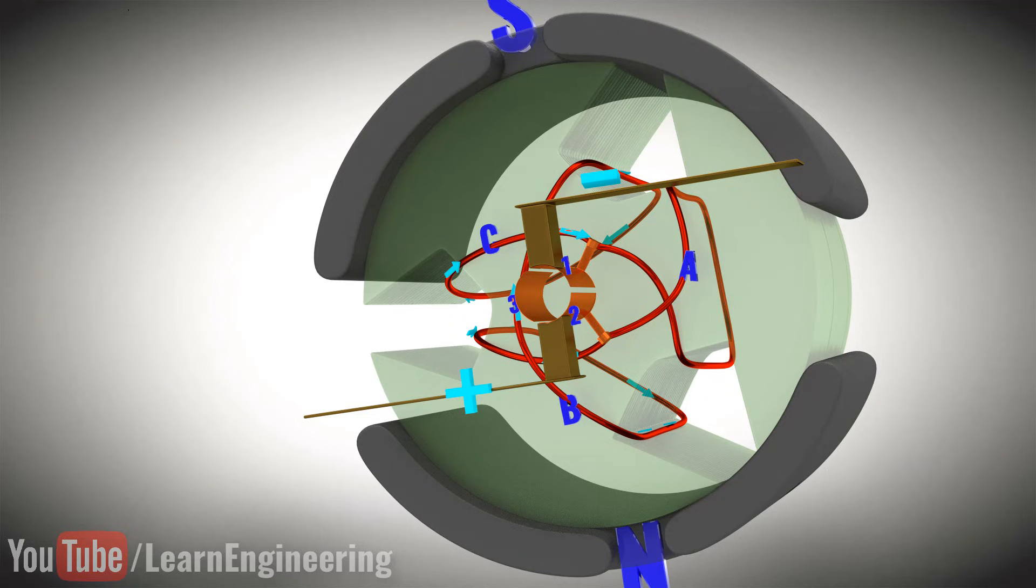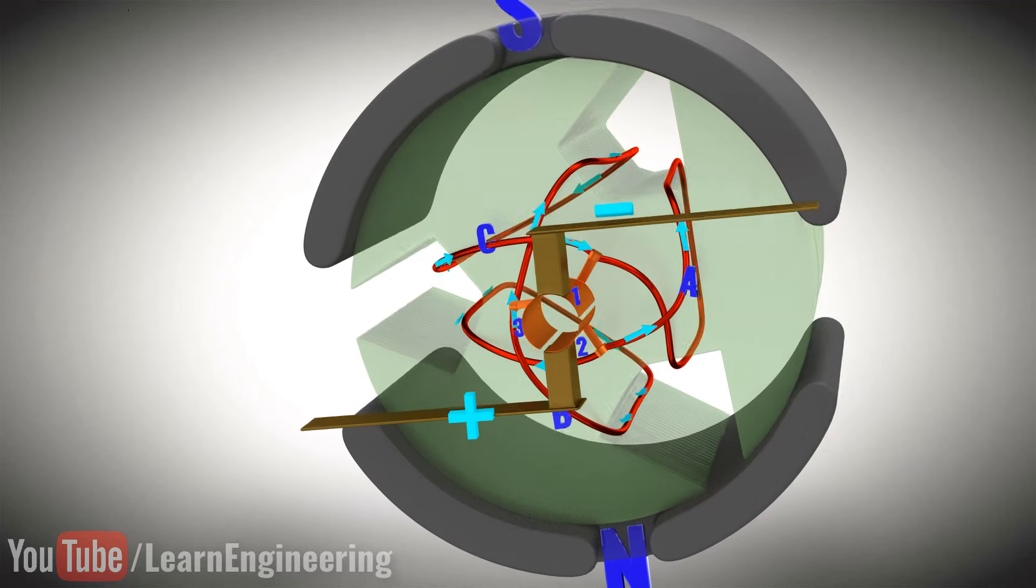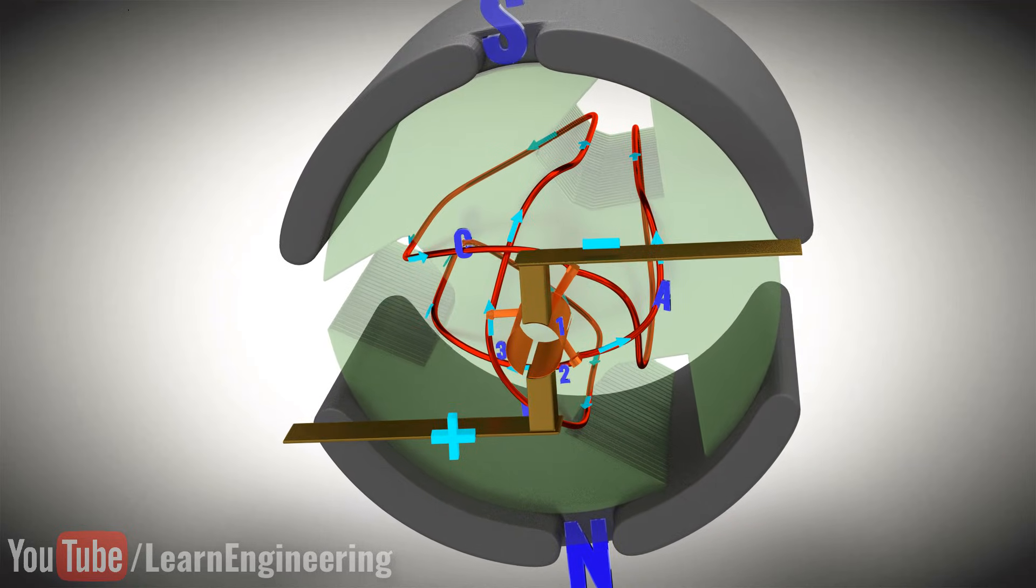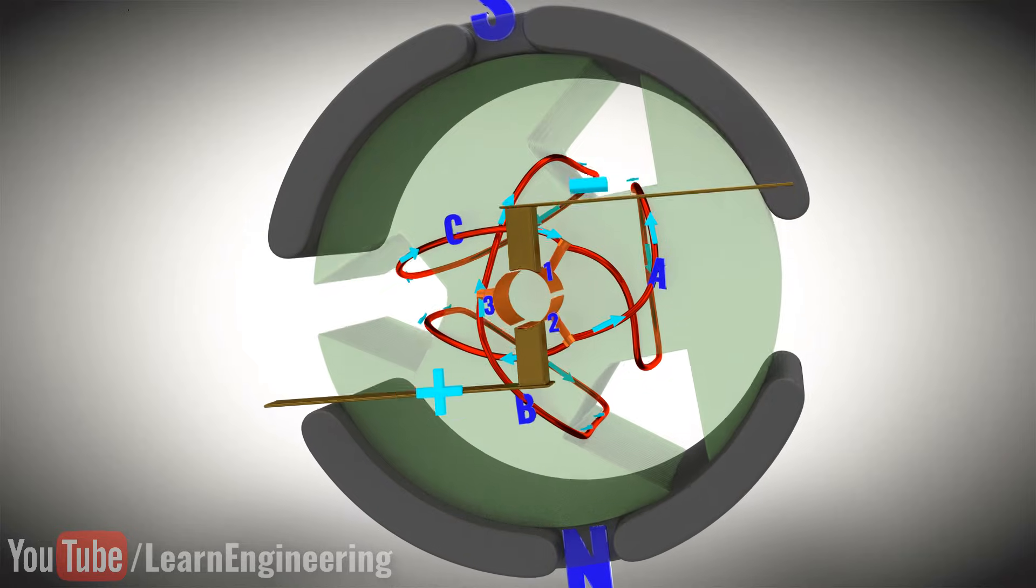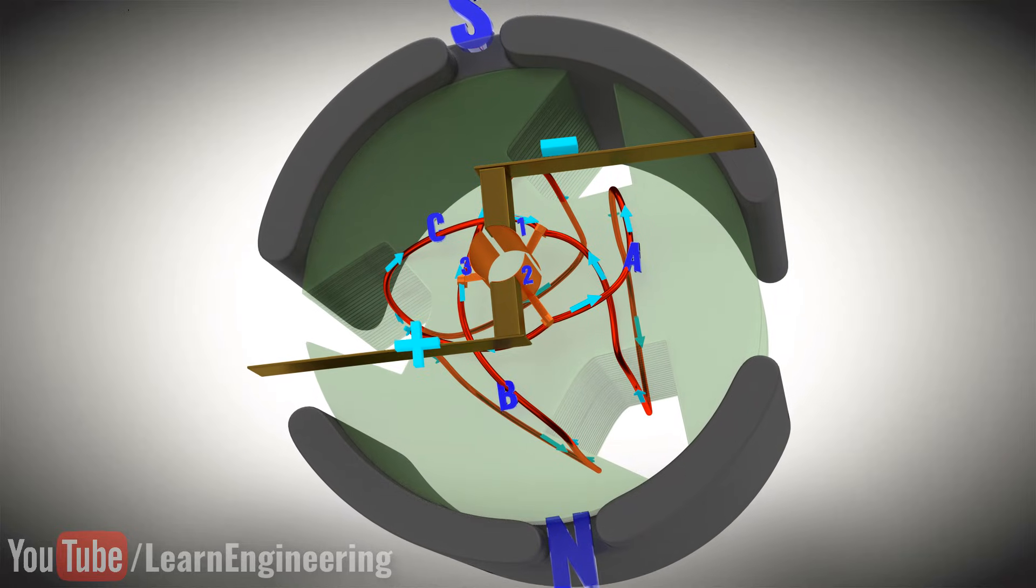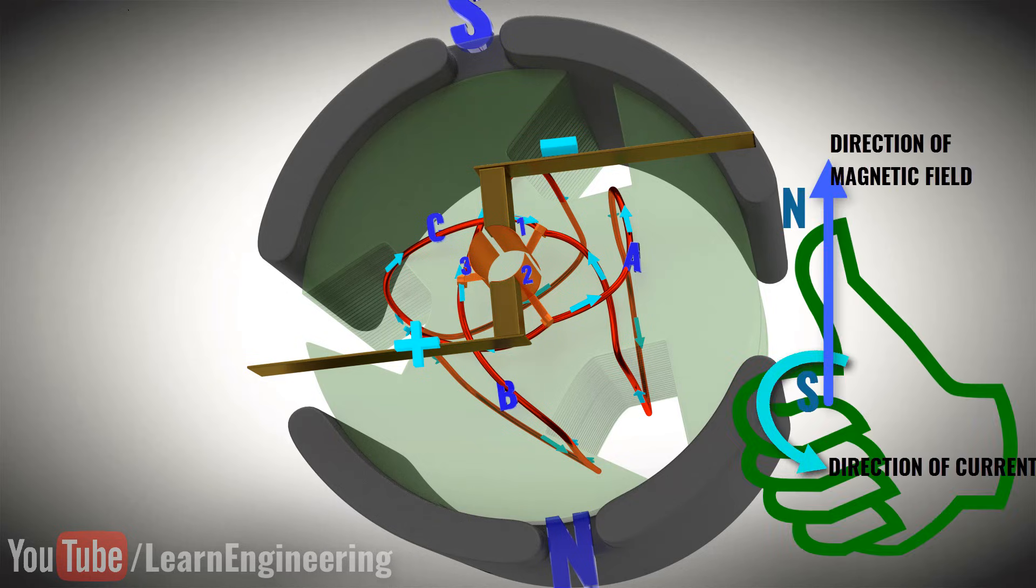If you check the current flow in coil A, you can easily predict that there will be a current flow as shown. Now you can easily predict the magnetic polarity of each coil with the help of the right-hand thumb rule. Coils B and C become north in polarity, while coil A becomes the south pole.